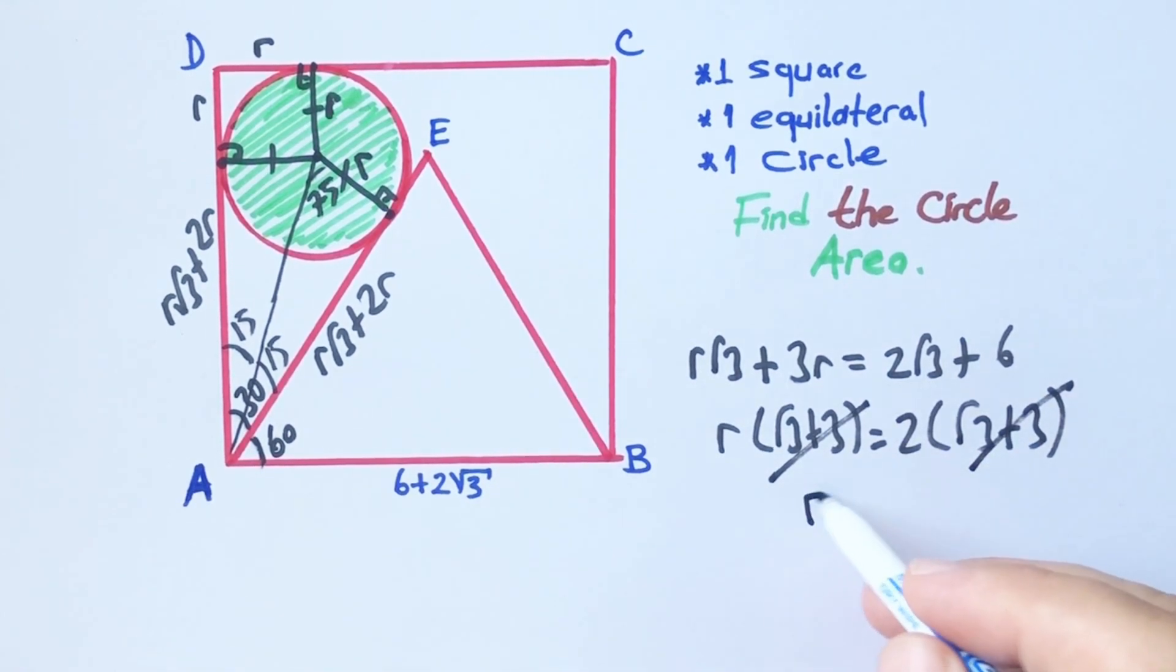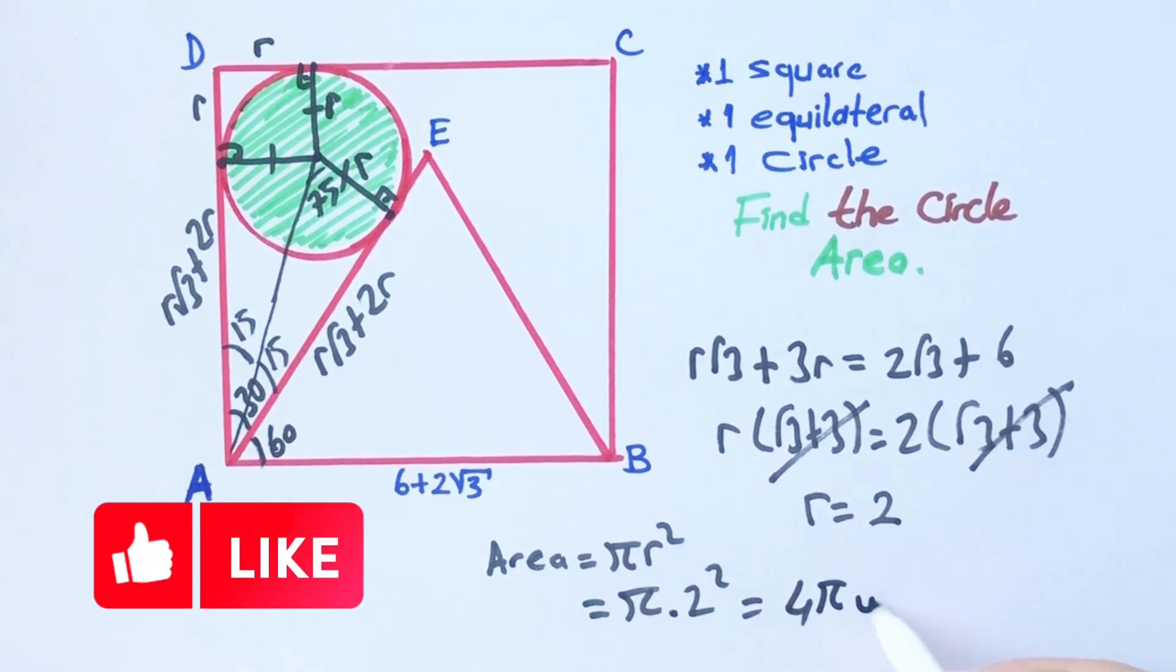So r equals 2 units. We know that the formula of the circle area equals πr². So π times r² equals π × 4. That means the circle area equals 4π square units. Thanks!